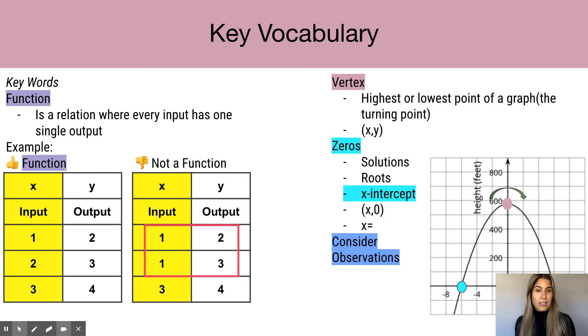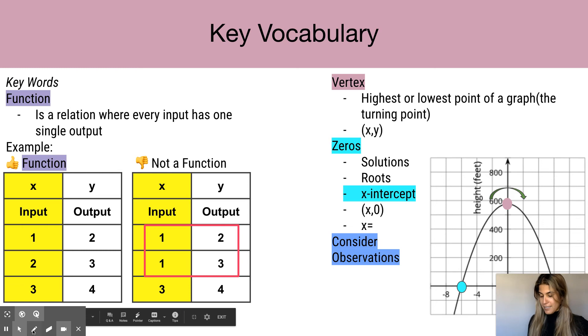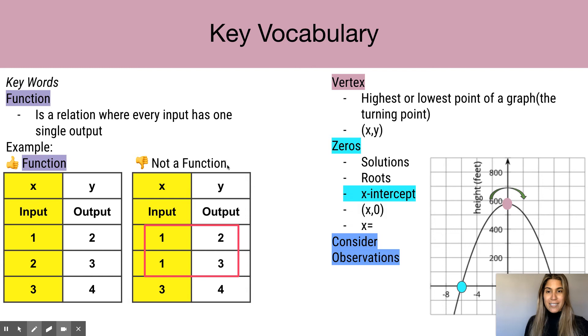So how do you identify if something is or isn't a function? Remember, a function is a relation where every input has a single output. Here we have an example of what a function looks like. Every input has a single output. Now, we can say that this is not a function because each input doesn't have a single output.